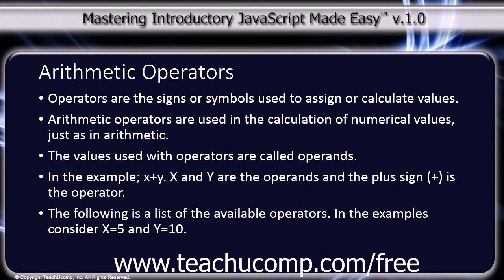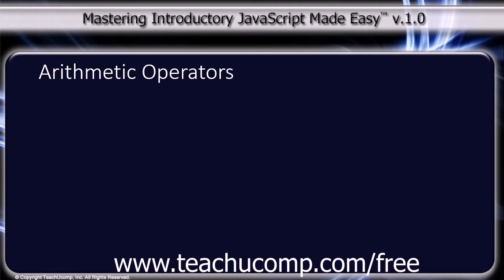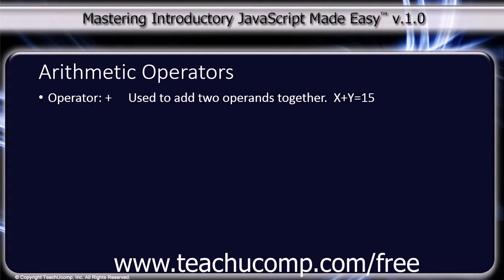The following is a list of available operators. In the examples, consider x equals 5 and y equals 10. The first operator is the plus sign, which is used to add two operands together. For example, x plus y equals 15.